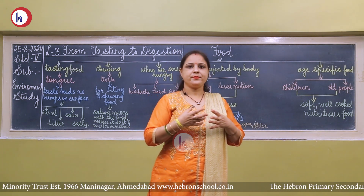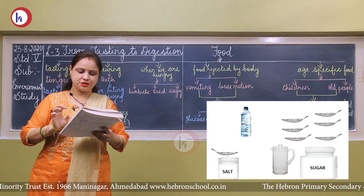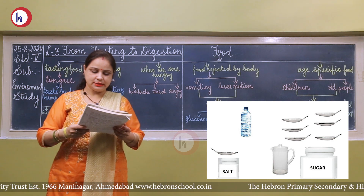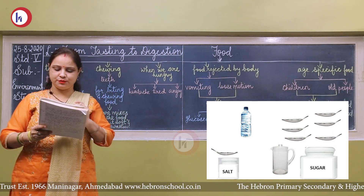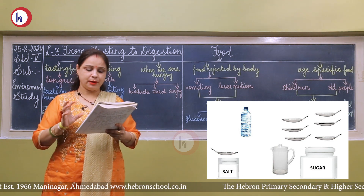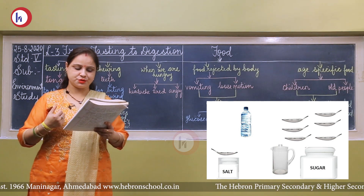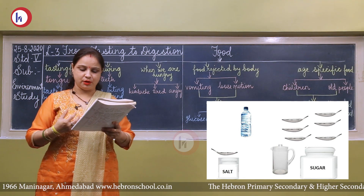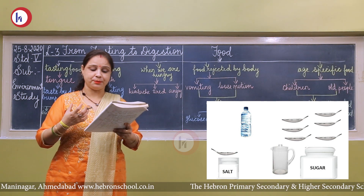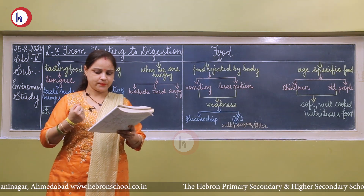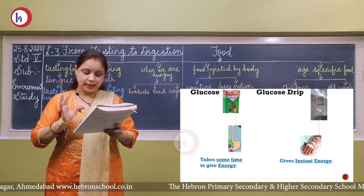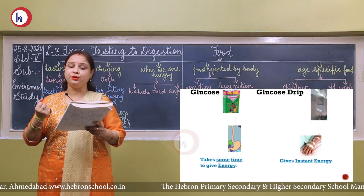Why do we make a solution of sugar and salt? This is given to someone who has vomiting and loose motion. In case of vomiting and loose motion, the amount of water, salt, and sugar decreases in the body, which can be dangerous. So a salt and sugar solution is given to replenish the loss.